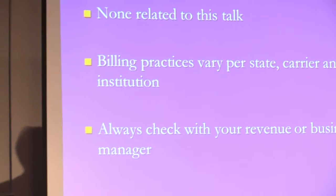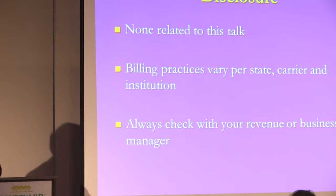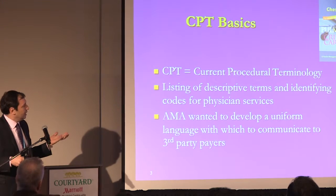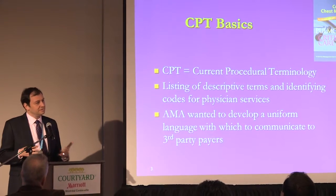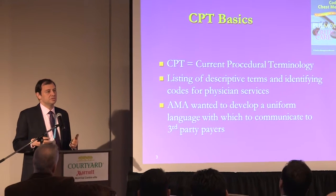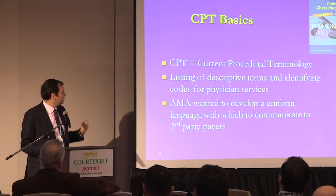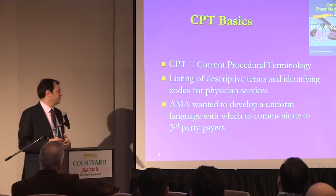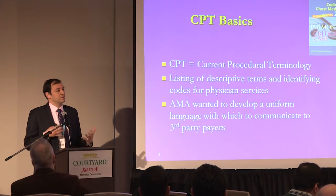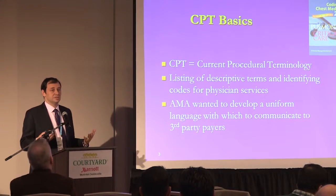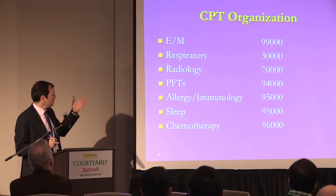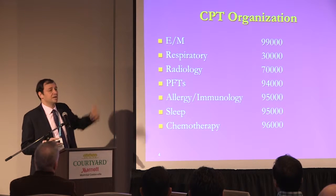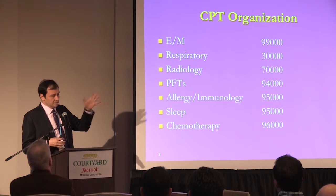I want to make sure you know that billing practices vary per state, carrier, and institution. Always consult with your local folks in your practice. CPT — Current Procedural Terminology — is the codes we use for billing, developed by the AMA to create a uniform language for communicating with payers about what we're doing to our patients. Respiratory is in the 30,000 range, which is why all our bronchoscopy codes start with a three.